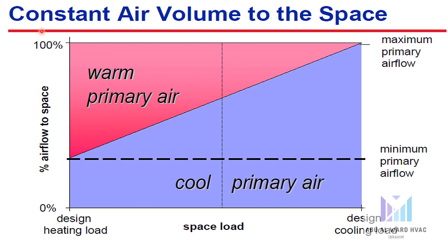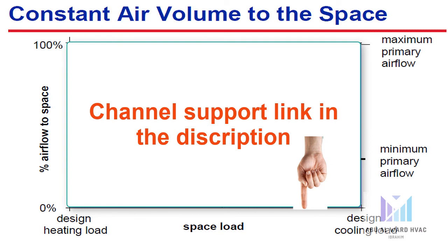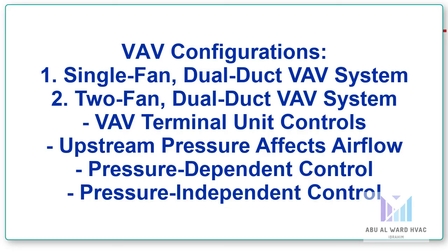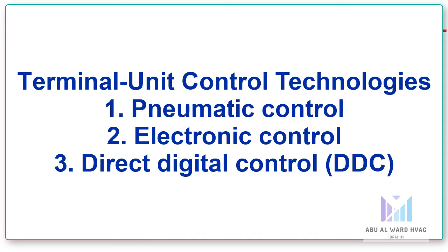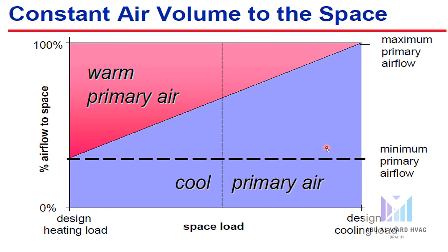The second case is the dual duct terminal with constant air volume to the space. To deliver a constant volume of supply air in a two-fan dual duct system, as the cooling load in the space decreases, the amount of cool primary air is reduced and the amount of warm primary air is increased, maintaining a constant total supply airflow to the space. Because of this constant airflow, no fan energy savings are realized at part load conditions. That's all for today's video. In the next video I will continue the remaining configurations of VAV terminals and also discuss the control system of VAV terminals. Thank you — please like, share, and subscribe to my channel.